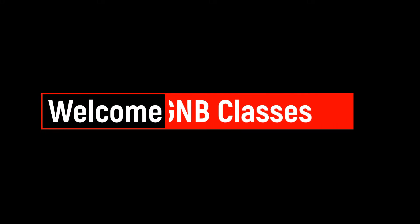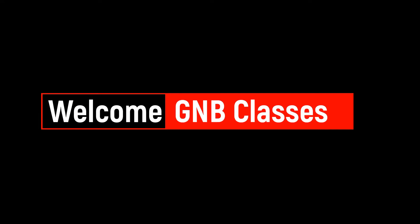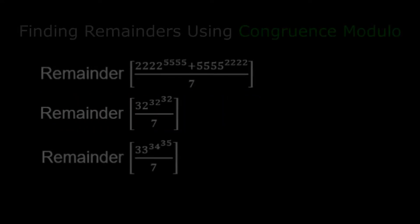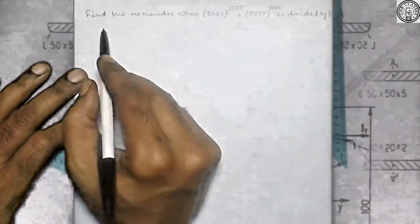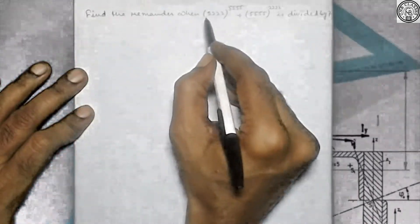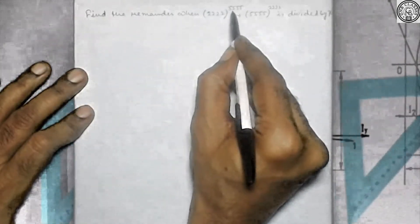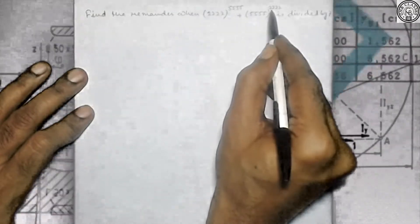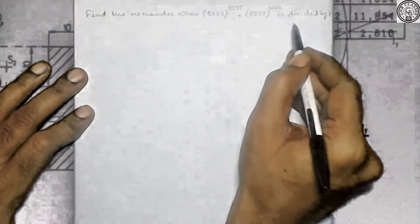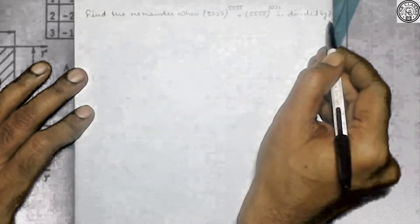Hello all. Welcome to GNB Classes. In this class, we are going to discuss about the remainder. The question is: find the remainder when √2 to the power √5 plus √5 to the power √2 is divided by 7.